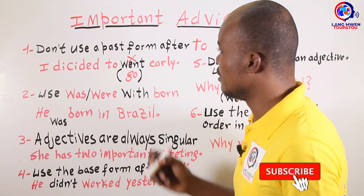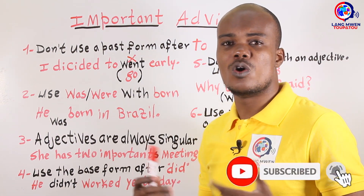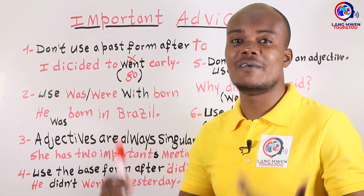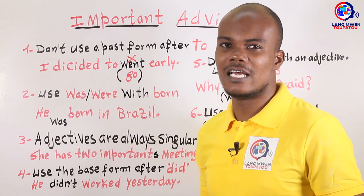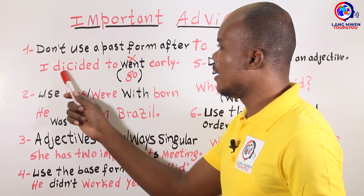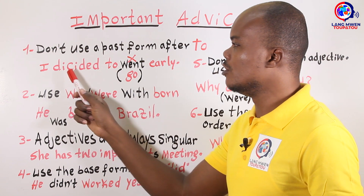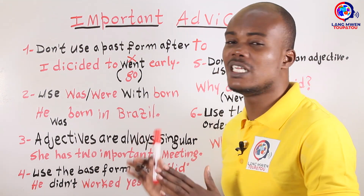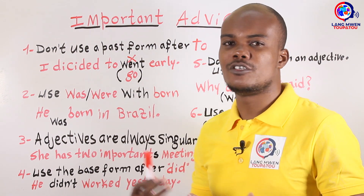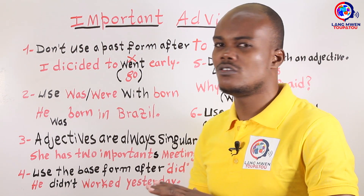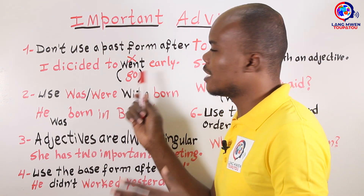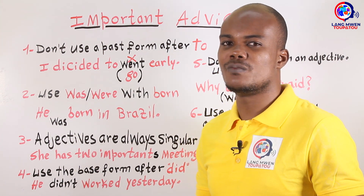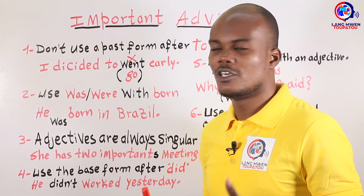Never say that, ladies and gentlemen. Do not say that. What should you say? Use the base form instead. For example, say 'I decided to go early.' Do not say 'I decided to went early.' Don't use the past form after 'to' — after 'to,' you are never supposed to use the past form.